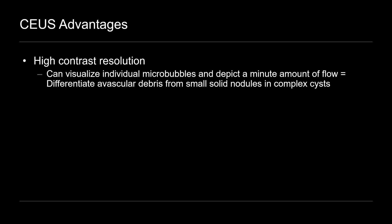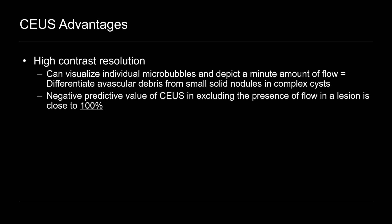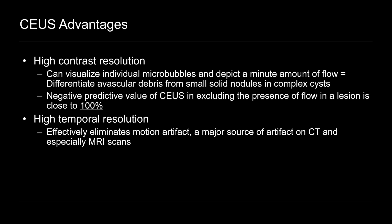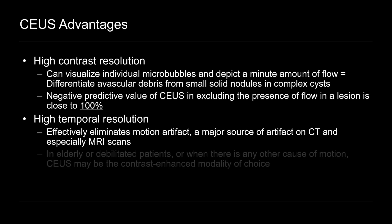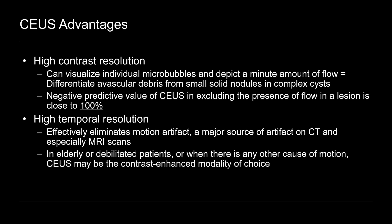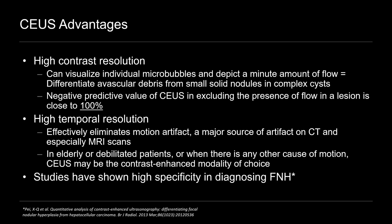Some of the advantages of contrast ultrasound compared to other imaging modalities: it has very high contrast resolution, meaning we can actually detect individual micro-bubbles and identify a minute amount of flow or enhancement. And that's helpful when you're trying to differentiate debris, for example, from small mural nodules in a cystic neoplasm. Also, the negative predictive value is nearly 100% in excluding flow, meaning if there's no flow detected on contrast ultrasound, it's very likely that there is truly no flow in the lesion. Also, the temporal resolution is very high, meaning that motion artifact is nearly completely eliminated, which can be a problem on CT and especially MRI. So patients that are prone to movement such as the elderly or debilitated patients, contrast ultrasound may be your imaging modality of choice. And regarding FNH, studies have shown a high specificity in making the diagnosis, up to at least 94% specificity.